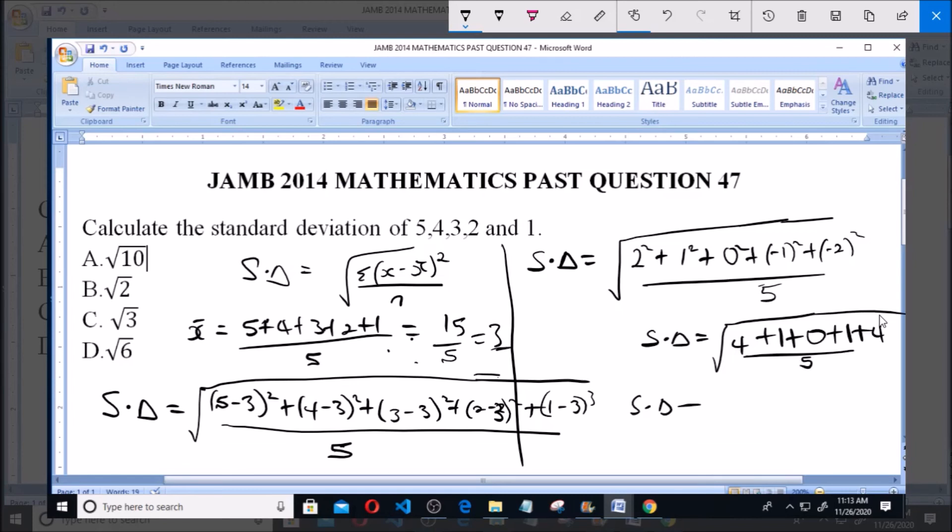So square root of 10 all over 5, which equals square root of 2, and that is option B. Thank you and make sure to subscribe to the channel for more videos.